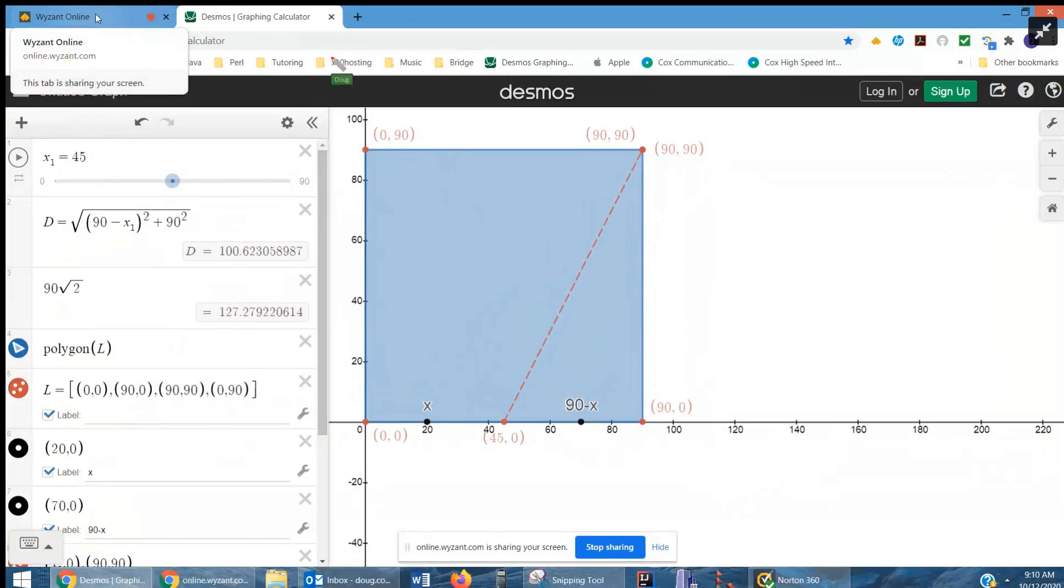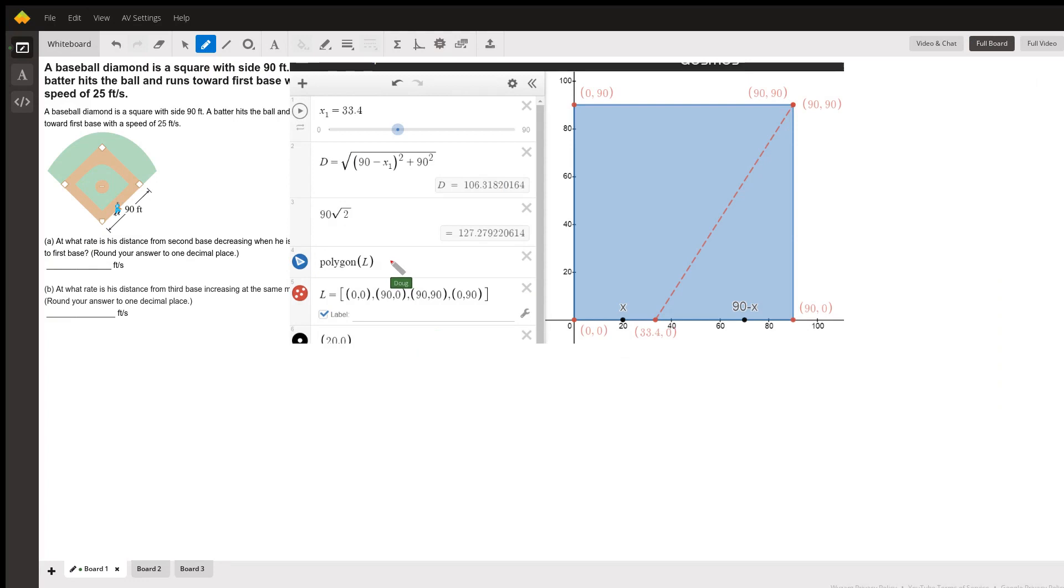So let's go back to Wisent and see if we can figure out how to find the derivative of D, capital D, with respect to t.